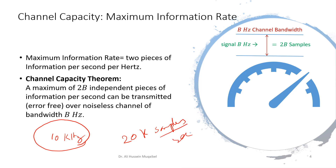We can do something about the relation between samples and bits — we'll see that later. If the system is binary then a sample equals a bit; otherwise we'll see. The conclusion from this is that for every channel there is a maximum capacity measured as information per second per hertz. Given 10 kilohertz, we can achieve 20 kilo information per second.